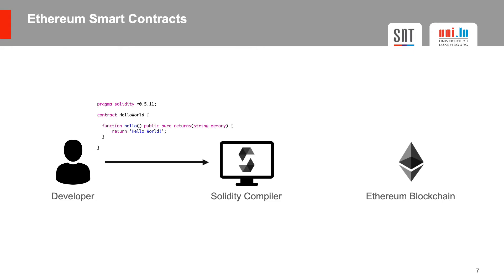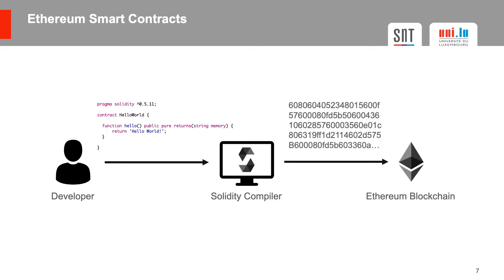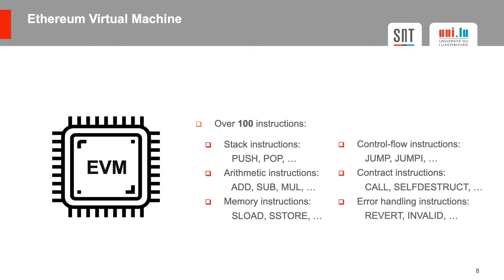The developer then uses the Solidity compiler to translate the source code into bytecode. Finally, the developer takes the bytecode of the smart contract and deploys it to the Ethereum blockchain using a transaction. The bytecode will then be interpreted by the so-called Ethereum Virtual Machine. The EVM is a registerless stack-based virtual machine that defines over 100 different instructions, ranging from simple stack instructions such as push and pop to more complex smart contract related instructions such as call and self-destruct.